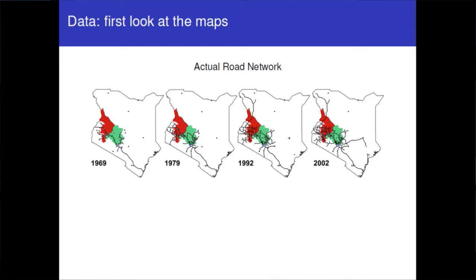Let me briefly demonstrate what we do with the data. Depicted here is Kenya and the evolution of the road network across selected years aligned with regime and institutional changes. The red area is the Kalenjin president Moi's region, and the green area is the Kikuyu-dominated districts. From 1969 to 1979, a period of autocracy, you see a lot of road building in the green area. Between 1979 and 1992, President Moi comes in and you see a lot more development in the red area. Between 1992 and 2002, you see much more even distribution of the road network.